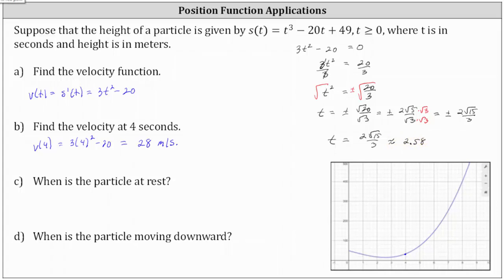Looking at the graph, notice how when t is approximately 2.58, we do appear to have a horizontal tangent line. So to answer the question, the particle is at rest at t equals two square root 15 divided by three seconds, which is approximately 2.58 seconds.